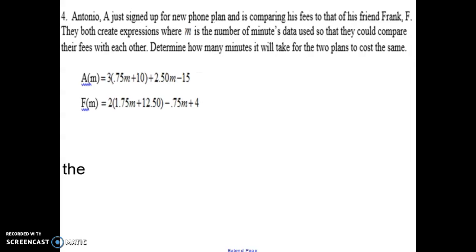Both of these expressions have been created to determine the number of minutes based on the data that they're using. And we want to compare them to find out how many minutes it will take for the two plans to cost the same. Remember where we had same in the word wall? It was in the equal sign. So how can we make these two an equation that we can solve, set them equal to each other? It just seems so simple, right? Let's take Antonio's plan and set it equal to Frank's plan.